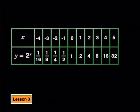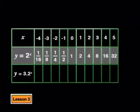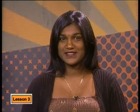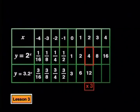Let's check whether this is what happens. Here is a table of values for the parent function y equals 2 to the power of x. Let's add another column to work out the y values of y equals 3 times 2 to the power of x. We take each y value for the parent function and multiply it by 3. We get: 3 sixteenths, 3 eighths, 3 quarters, 3 halves, then 3, 6, 12, 24, and 48.